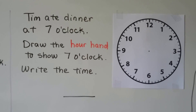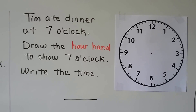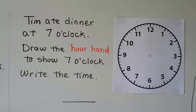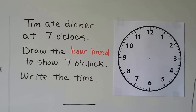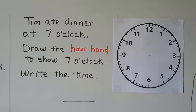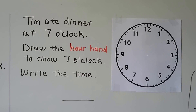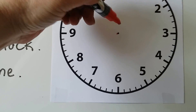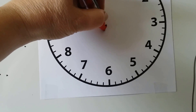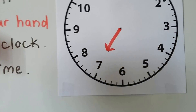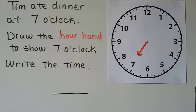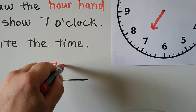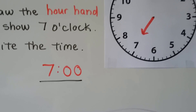Tim ate dinner at seven o'clock. Draw the hour hand to show seven o'clock and write the time. We need to draw seven o'clock on this blank clock face. To make seven o'clock, we draw the hour hand pointing to the seven — we start from the center point, and since the hour hand is short, we only come a little bit of the way, pointing to the seven. We can write the time: a seven, the two dots, and a zero zero. Seven o'clock.